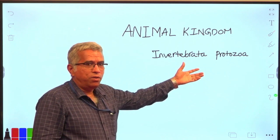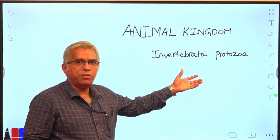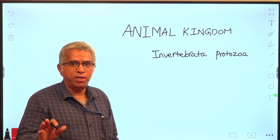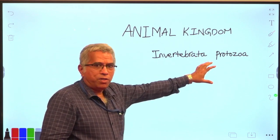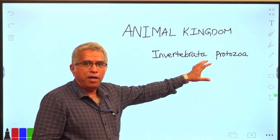These protozoa are unicellular organisms. The best example is amoeba, euglena, paramecium. They exhibit protoplasmic grade of organization.